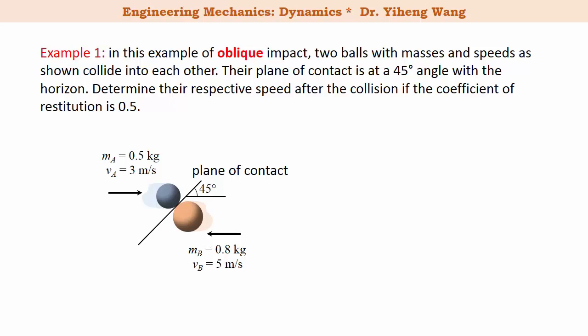Let's look at this example. Although the two particles are moving both horizontally, when they collide into each other their plane of contact is at a 45 degree angle with the horizon. So in this case there exists velocity component that is at an angle to the line of impact. And unlike the central impact that we introduced earlier, this is an example of oblique impact. And we need to determine the respective speeds after the collision of these two particles, and we know that the coefficient of restitution between them is 0.5.